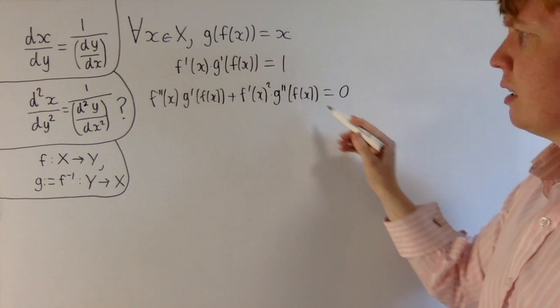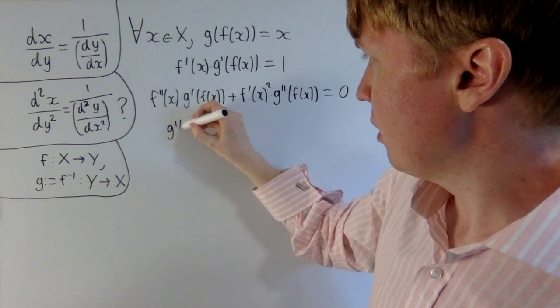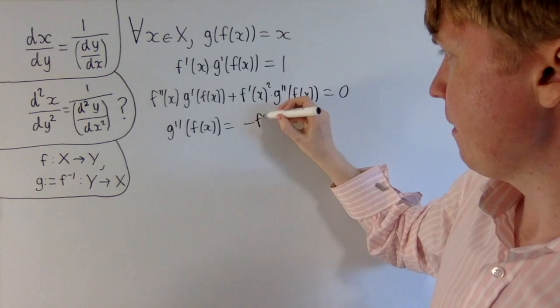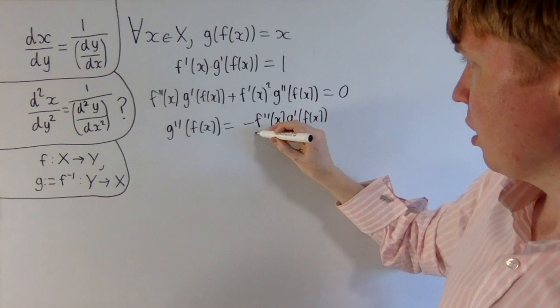We've differentiated the 1 there. Now we're interested in g''(f(x)), so we'll rearrange to make this the subject. We get the second derivative of g at this point f(x). This is now equal to minus f''(x) multiplied by g'(f(x)), all divided by [f'(x)]².